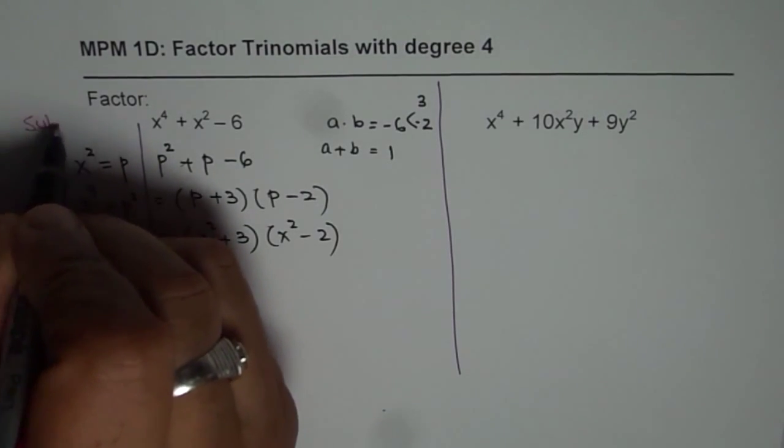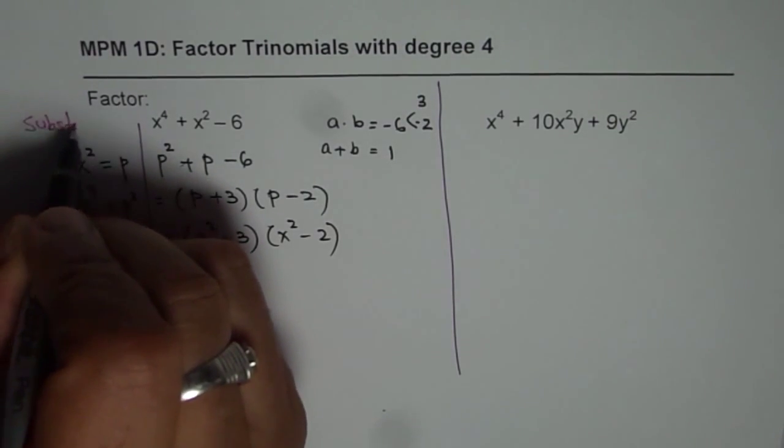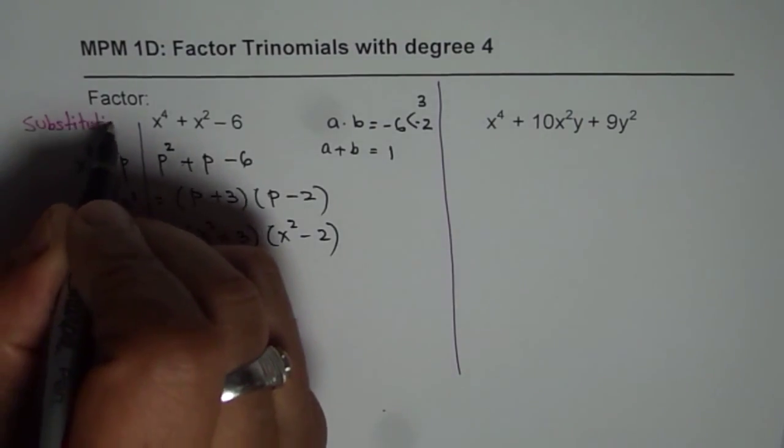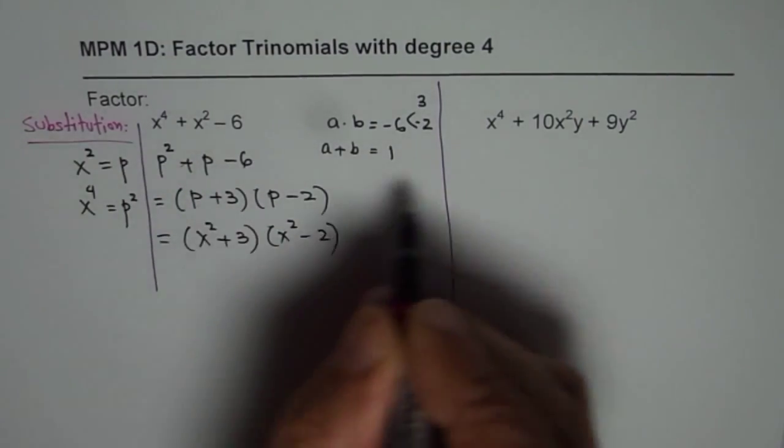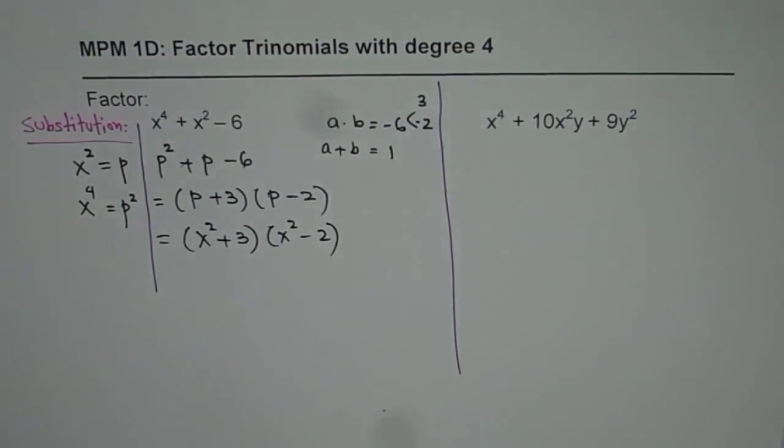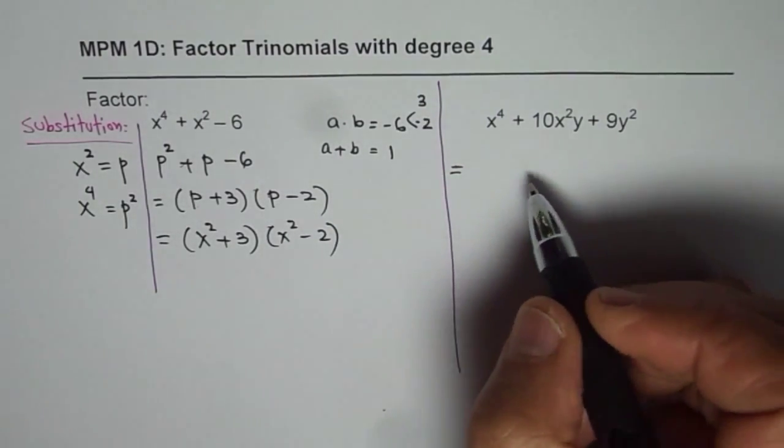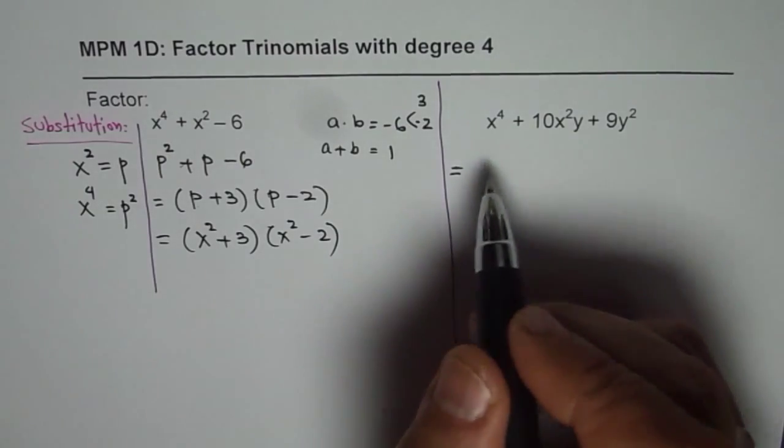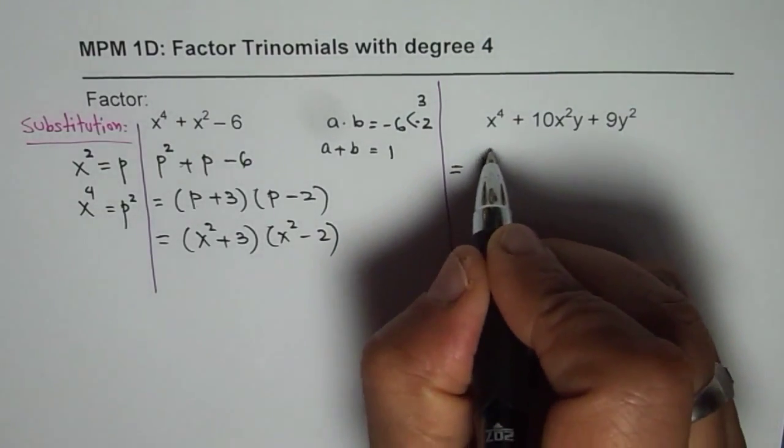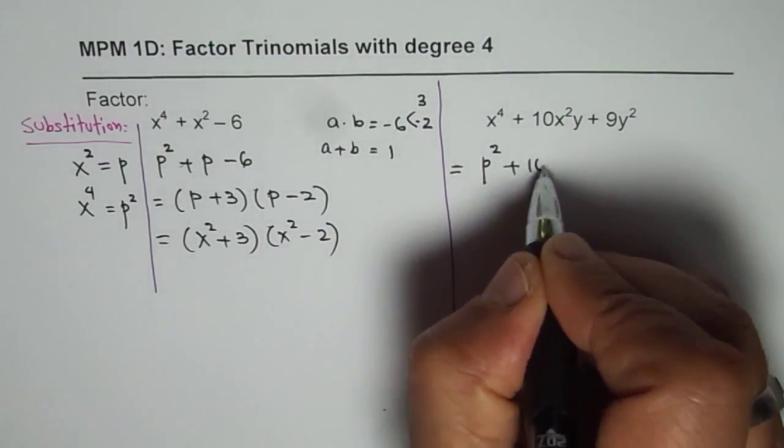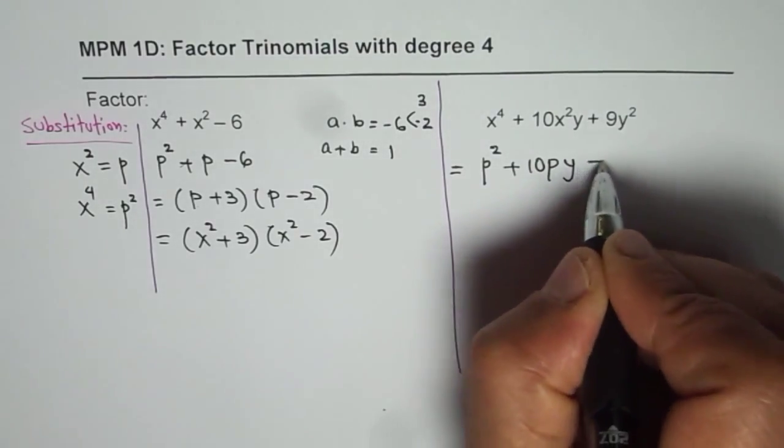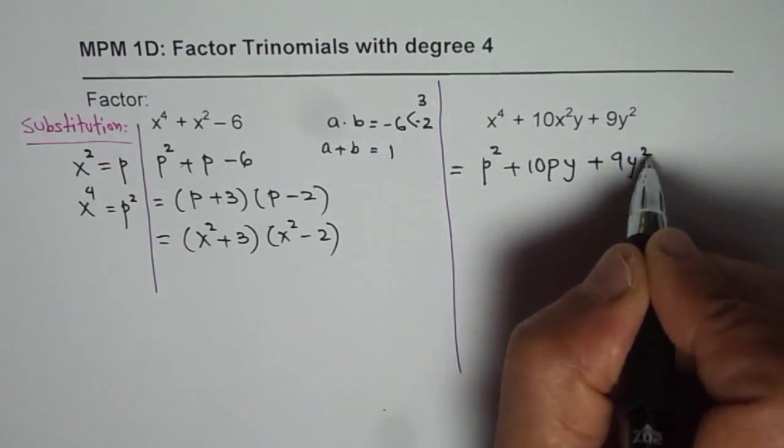So let me write here substitution. We will apply this for both problems. If I do that, the expression, the trinomial, gets transformed and can now be written as p² + 10py + 9y².